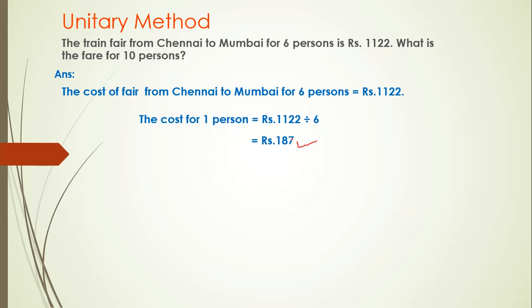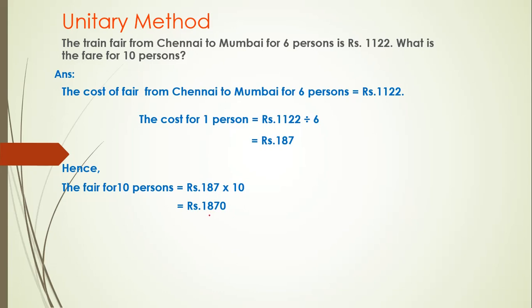We will multiply rupees 187 with 10 to get the cost for 10 persons. Hence the fare for 10 persons equals rupees 187 into 10, which equals rupees 1870. This is the final answer.